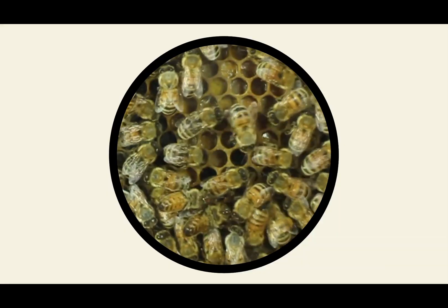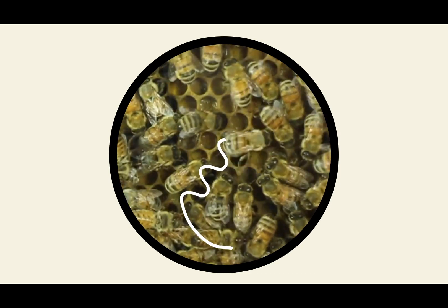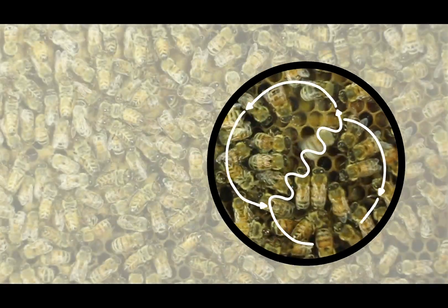Before von Frisch, other scientists had observed that returning bees tended to waggle about excitedly in a figure eight pattern before sharing the collected pollen and nectar with their hive mates.